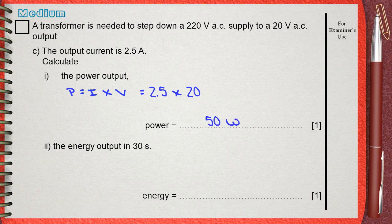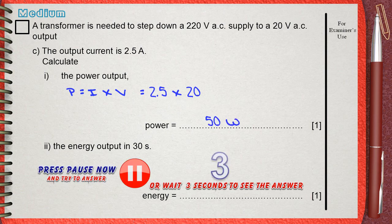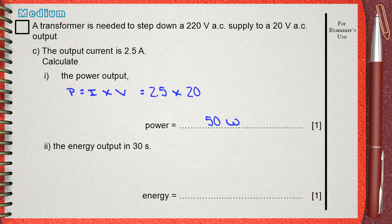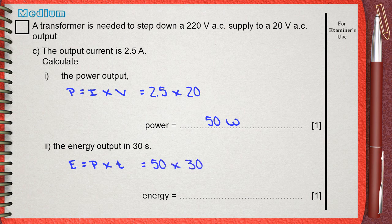Part ii) the energy output in 30 seconds. Another simple direct calculation. Energy equals power multiplied by the time. This means 50 times 30, which is 1500 Joules.